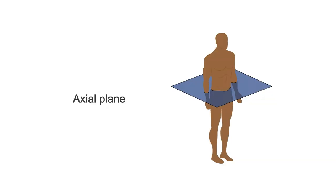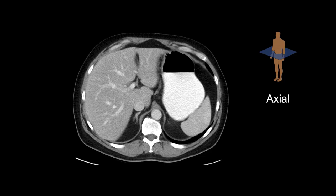Once the patient images are obtained, they are reconstructed first in the axial plane, which reflects how the images were taken. The axial plane can be thought of as slices through the patient. The axial plane is the one that radiologists use the most, but it is not the most intuitive. We do not think about people in slices, and the anatomic right and left are reversed on the images. For example, in this image, the liver is found on the left side of the image, but anatomically it is located on the right.